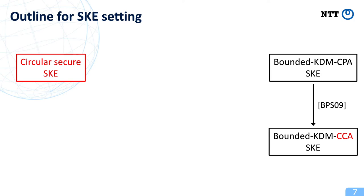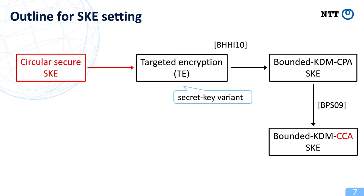I will talk about the outline of how to obtain our results, starting with the case of SKE. As shown by Bakkes et al., we can easily transform bounded KDM-CPA-secure SKE into bounded KDM-CCA-secure one. So in this setting, all we have to do is to construct bounded KDM-CPA-secure SKE from circular-secure SKE. We accomplish this task by using targeted encryption, a primitive introduced by Barak et al. to achieve bounded KDM-CPA-secure encryption scheme.